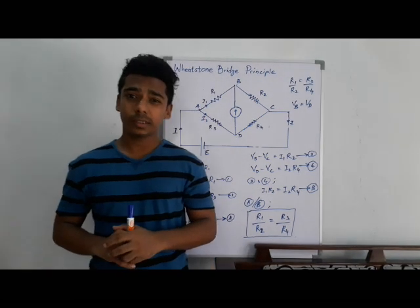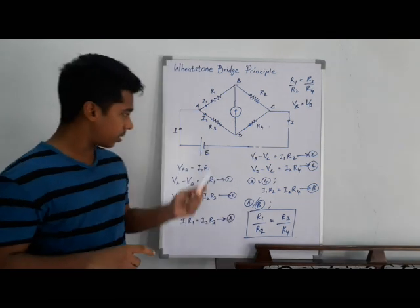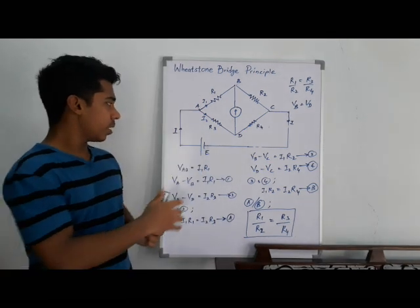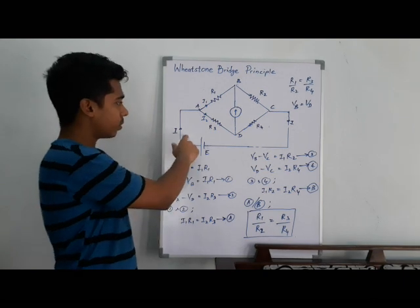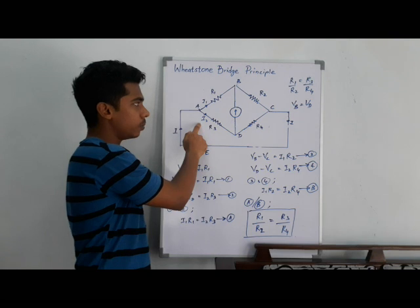Now let's try to prove the Wheatstone Bridge principle. Now let's consider that this current comes here, so it divides. Consider like I1 and I2.